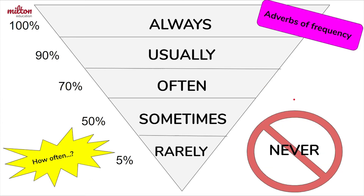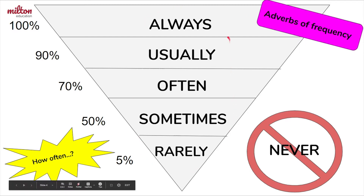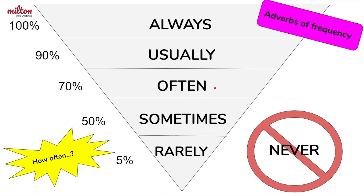Do you remember our adverbs of frequency? They are these words here: always, usually, often, sometimes, rarely, and never. These words help us to say the amount of times a person does an action in a certain period of time.